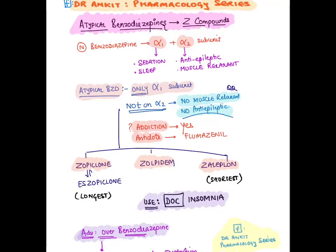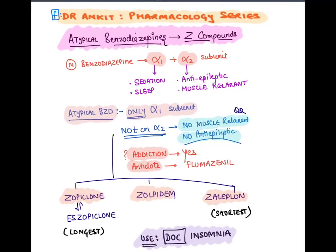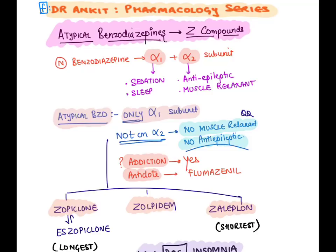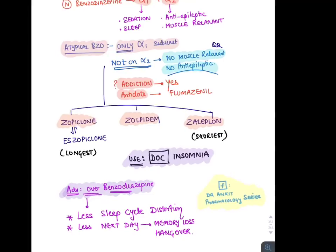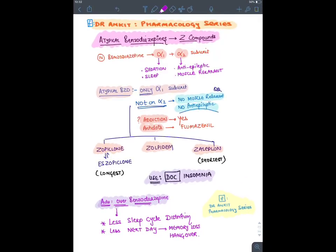Atypical benzodiazepines, also known as Z-compounds, all start with 'Z.' Normal benzodiazepines block both alpha-1 and alpha-2 subunits: alpha-1 opening causes sedation and sleep; alpha-2 opening causes anti-epileptic and muscle relaxant effects. Atypical benzodiazepines only act on alpha-1, so they only produce sedation and sleep. They have no muscle relaxant or anti-epileptic effect, are still addictive, and their antidote is flumazenil. Drugs: zopiclone, zolpidem, zaleplon — drug of choice for insomnia.